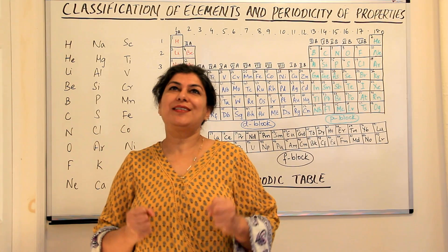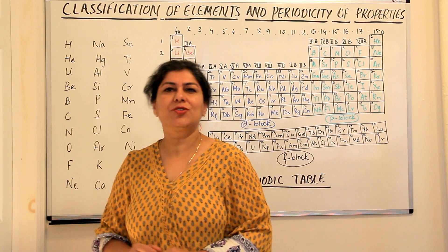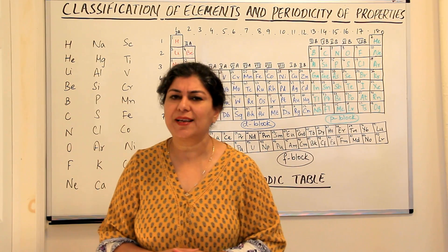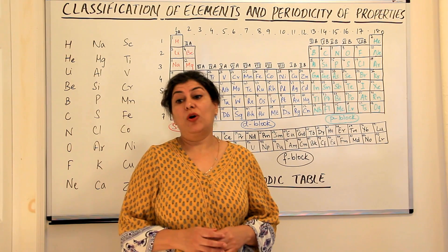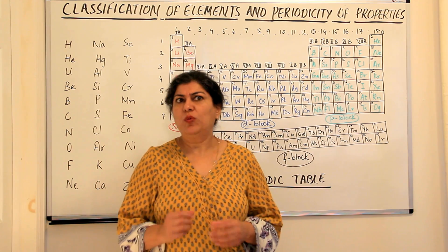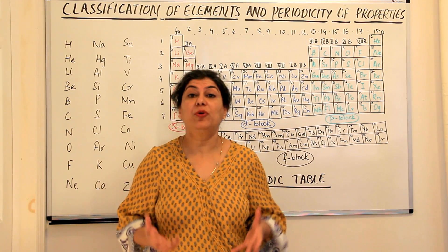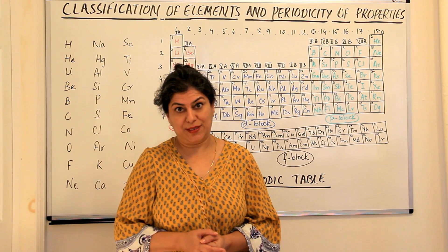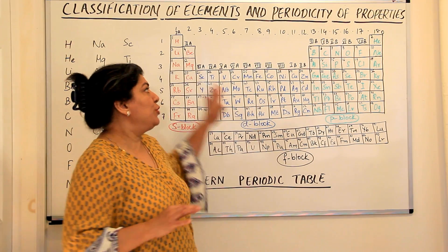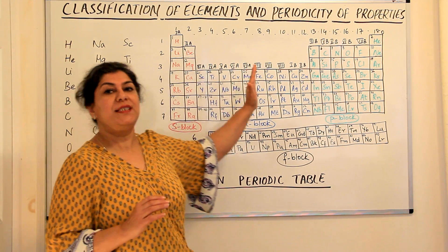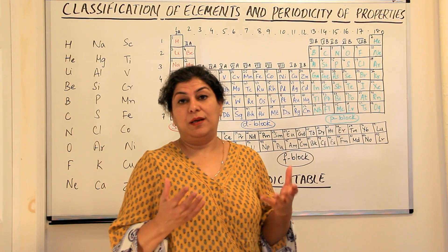Now in order to understand the periodic trends and to be able to understand the elements — whether they are metals or nonmetals, how they would behave in chemical reactions, whether they form ionic compounds or covalent compounds or prefer not to react at all, whether reactions would be violent or slow — all of this can be predicted just by knowing the electronic configuration of elements.